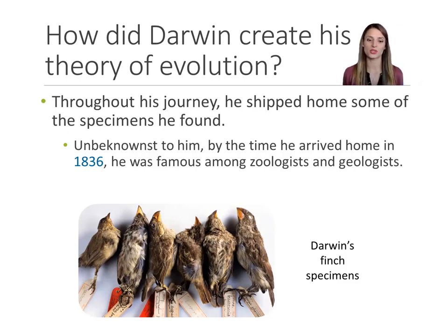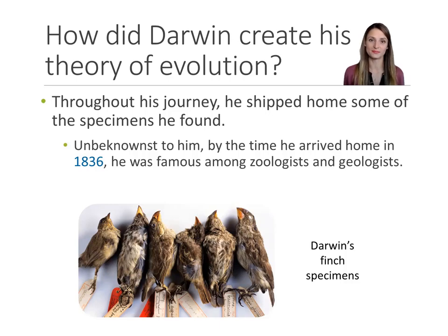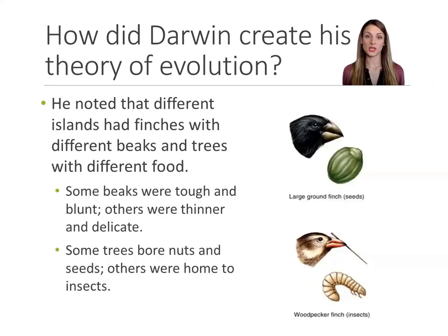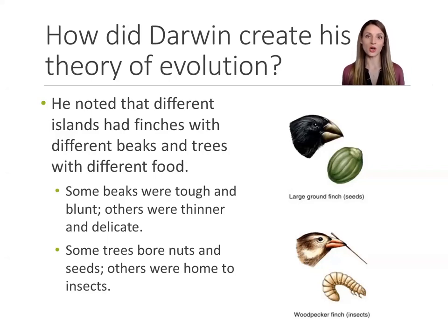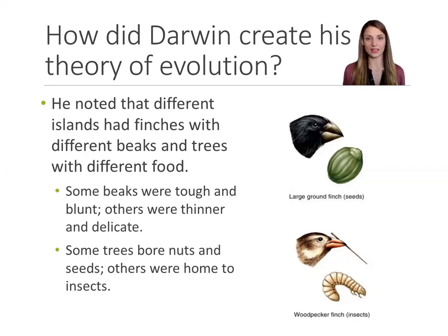The image shows Darwin's actual finches. You can see the tags on their feet — they were written by Charles Darwin. Once he was home, he was able to start working on his theory and testing some of his ideas. One of the things he noticed was that finches on different islands looked differently.